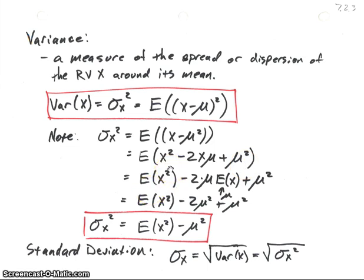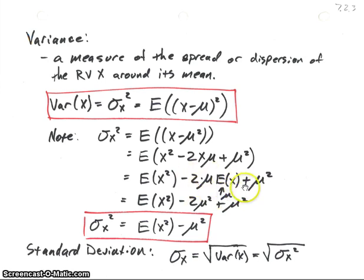Since the expected value operator is linear, we can take the expected value of each term inside: the expected value of x squared, minus 2 mu times the expected value of x, plus mu squared. Now remember, the expected value of x equals mu, so this becomes minus 2 mu squared. Adding those last two terms gives minus mu squared. Therefore, sigma sub x squared equals the expected value of x squared minus mu squared.